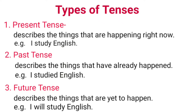Present tense describes the things that are happening right now. For example, 'I study English.' Past tense describes the things that have already happened. Example is, 'I studied English.' And future tense talks about the things that are yet to happen. Example is, 'I will study English.'